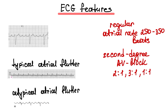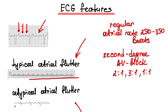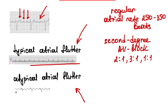We can see flutter waves and we can calculate them. Typical atrial flutter looks like this — waves are sawtoothed. This is an example of atypical atrial flutter, where we can see a different wave waveform.